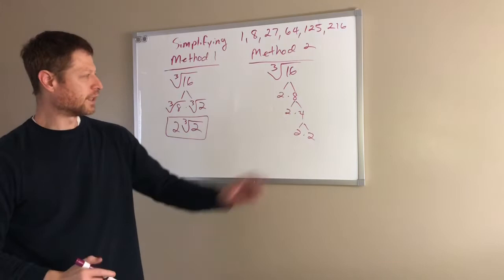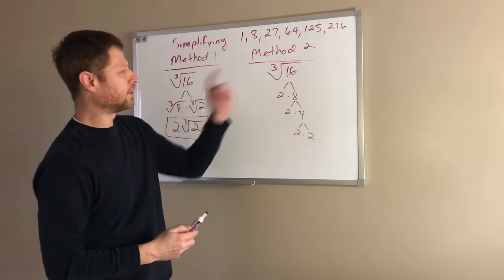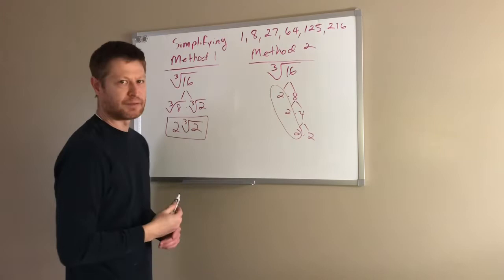Now yesterday we were circling every pair of 2's. Well, since we're doing the cube root, we're gonna be circling every 3, and every 3 of the same prime number that we have comes out as one of those in our answer.